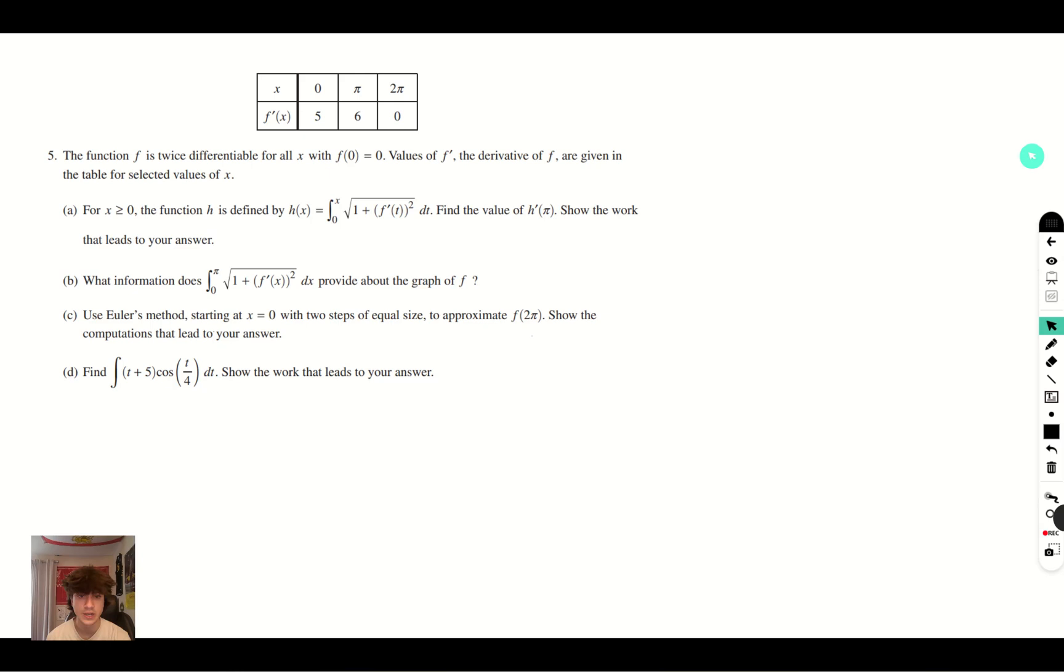The function f is twice differentiable for all x with f(0) = 0. Values of f prime, the derivative of f, are given in the table for the selected values of x.